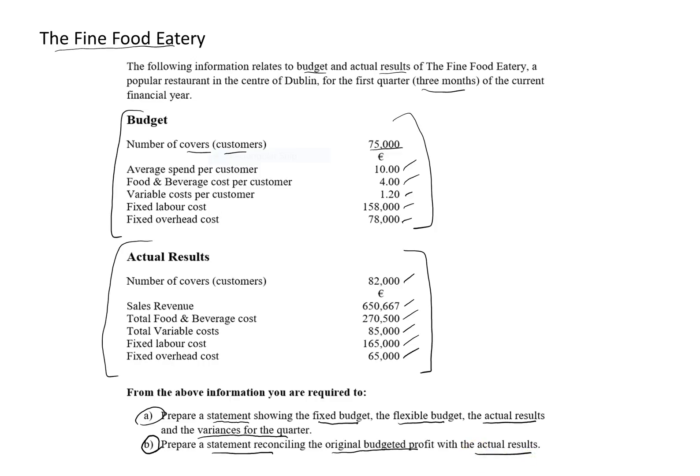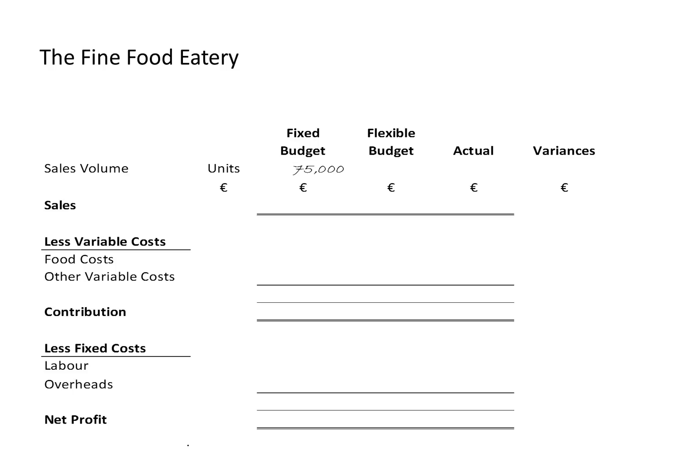To start off I'm going to draw up a budget control statement. In this statement I'm going to have a number of columns: a column for the fixed budget, a column for the flexible budget, a column for the actual results, and a column for the variances. I'm going to lay out my financial information in a marginal costing format. If I put up a blank budget control statement here, this is what it would look like. You can pause, rewind and play at any time. This is the basic structure of our budget control statement.